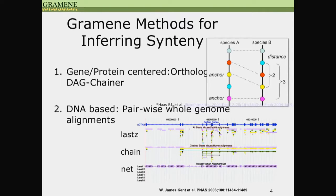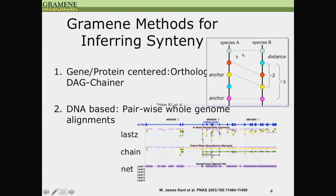In terms of implementation of this method, we use a published program called DAG-Chenna, which uses a dynamic programming algorithm and a sophisticated scoring formula to search in the genomes and look for the optimal and maximum region with co-linear gene orders.